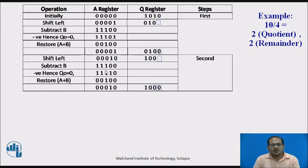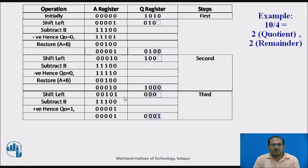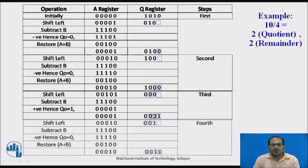Similarly, for the second step, shift the content of A and Q left by 1 position again — Q0 becomes vacant. Then subtract B. At the end of the second step, we get 00010 and 1000. For the third step, again shift left, perform the subtraction, and fill Q0 based on whether the result is positive or negative. The fourth step similarly performs shift left, subtraction, and sets Q0 accordingly.